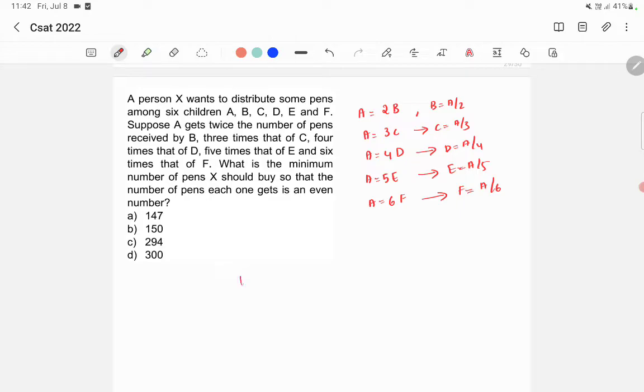Now, let's find the total number of pens. Total number of pens is equal to A plus B, which is A by 2, plus A by 3 plus A by 4 plus A by 5 plus A by 6. Now how can you make it into a single fraction? You need to find out the LCM. So what is the LCM of 2, 3, 4, 5 and 6?